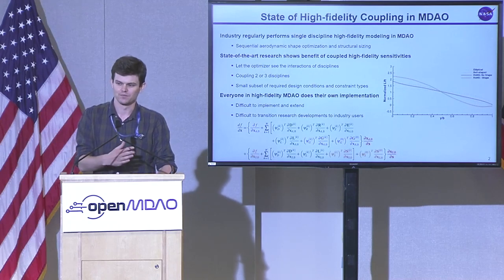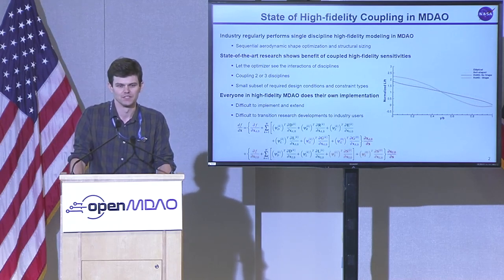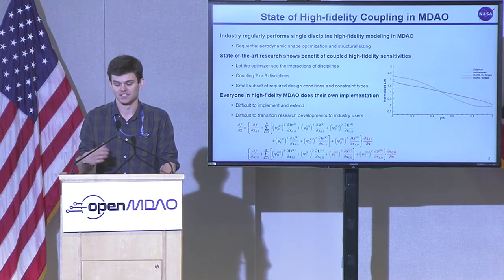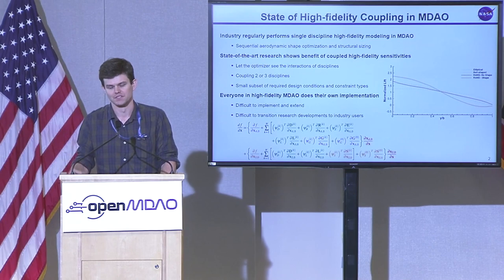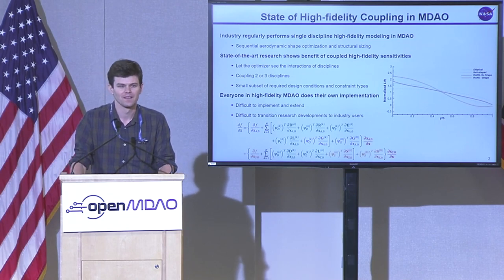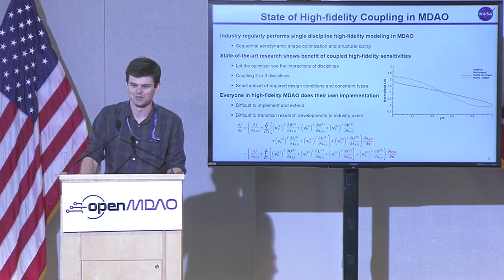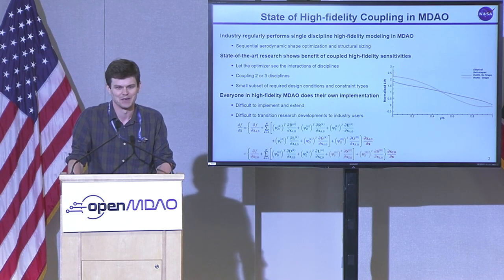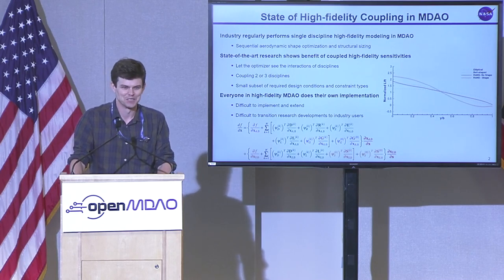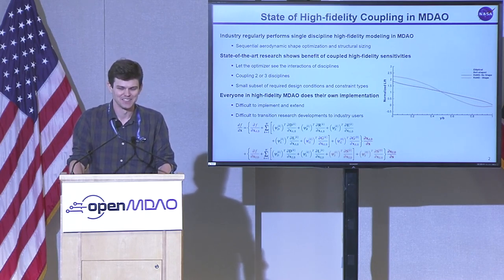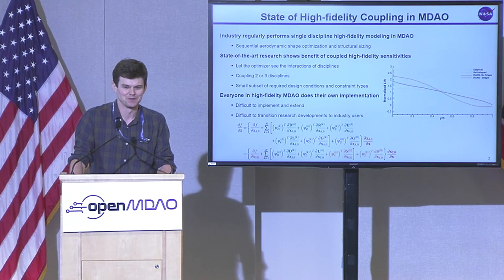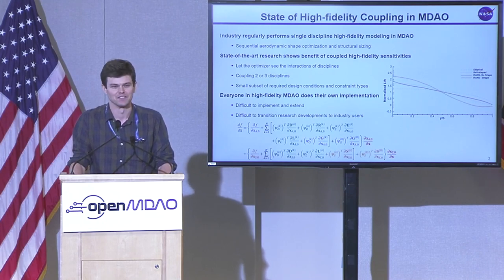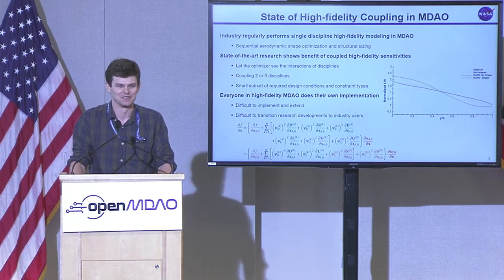With everyone working in these different frameworks, it's hard to share progress between groups and extend this to new disciplines. I've got a time domain adjoint equation at the bottom — we've done some time domain adjoint work in the past, but with just two disciplines this is a shape derivative equation. It gets very complicated very quickly with these high-fidelity codes, and each one of those terms is a high-fidelity code.